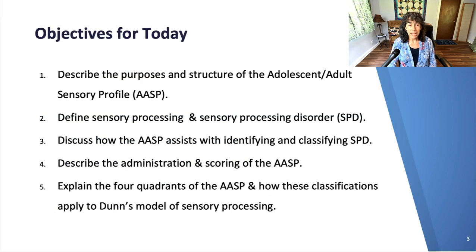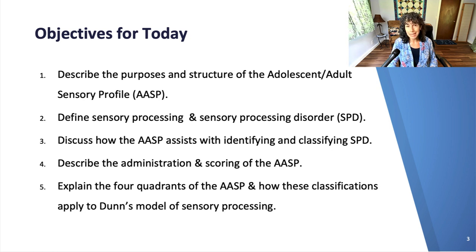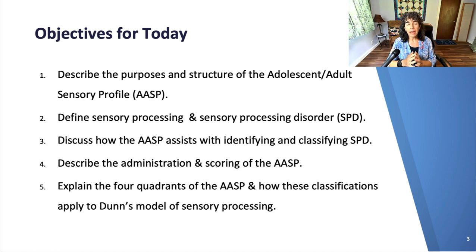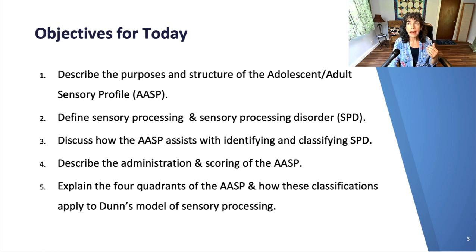We have five objectives today. The first is to describe what the AASP is, its purpose, and how it's structured. Then we're going to look at defining sensory processing and sensory processing disorder, or SPD — that's important because that's what this test is actually measuring. We'll discuss how the AASP assists with identifying and classifying SPD, describe its administration, scoring and interpretation, and then talk about the four quadrants — the system that Winnie Dunn, original author of the Sensory Profile, uses to define sensory processing, which guides scoring, interpretation, and intervention.